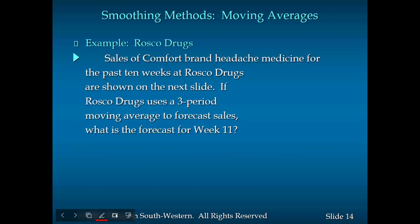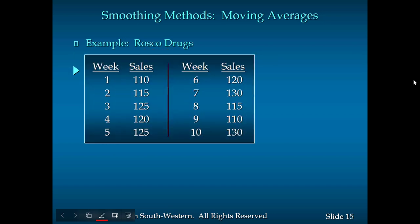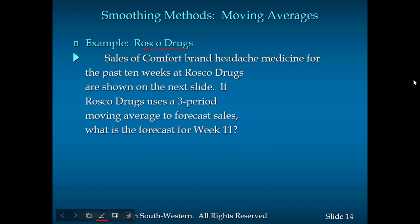Let's look at an example about smoothing methods and the moving average. Rascal Drugs — sales of a comfort brand headache medicine for the past 10 weeks are shown. If Rascal Drugs uses a 3-period moving average to forecast sales, what is the forecast for week 11?